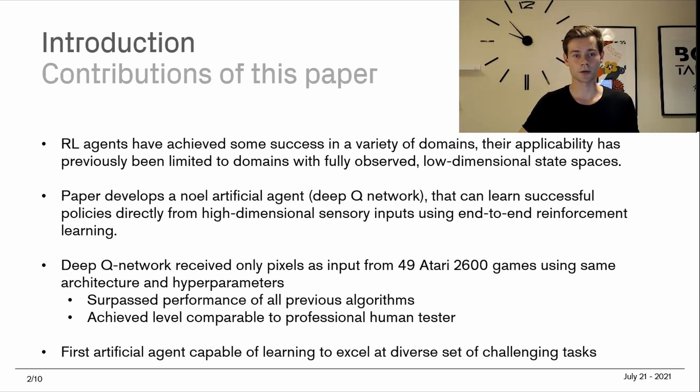Reinforcement learning agents have achieved some success in a variety of domains, but their application has been limited to domains with fully observed low dimensional state spaces. Fully observed means we can see the different states of the state space. It needs to be low dimensional as well because high dimensionality makes it very hard for the agent to learn effectively.